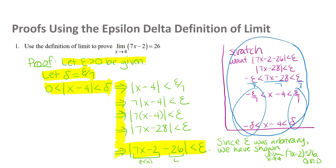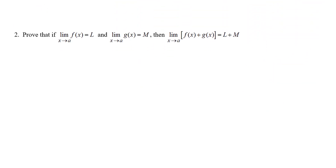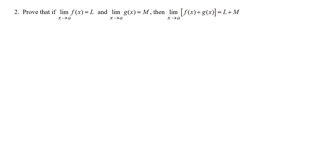We're going to look at one more example — not for a specific function, but one that actually proves one of those theorems we've been using about how to evaluate limits of functions. For this proof we'll need the triangle inequality, which says that |a + b| ≤ |a| + |b|.